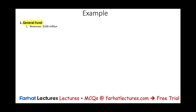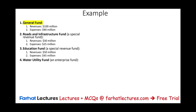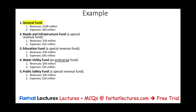Let's look at an example with figures. We have the General Fund with revenues of $100 million and expenses of $90 million. Roads and Infrastructure Fund (special revenue): revenues of $30 million, expenses of $25 million. Education Fund (special revenue): $50 million and $45 million. Water Utility Fund (enterprise): revenues of $40 million, expenses of $35 million. Public Safety Fund (special revenue): $20 million and $18 million. Parks and Recreation (special revenue): revenues of $10 million, expenses of $9 million.